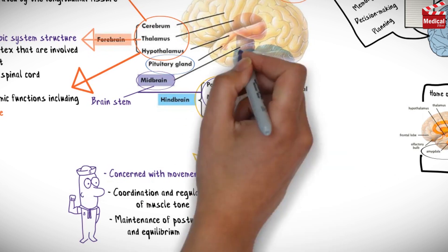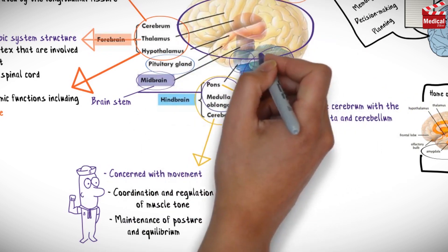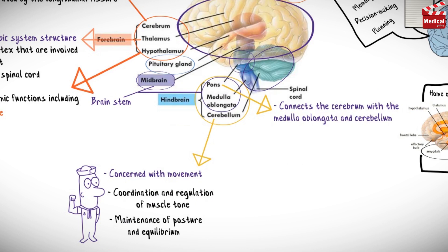The pons is a component of the brainstem which acts as a bridge connecting the cerebrum with the medulla oblongata and cerebellum. The pons assists in the control of autonomic functions, as well as states of sleep and arousal.